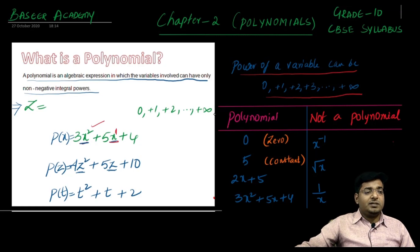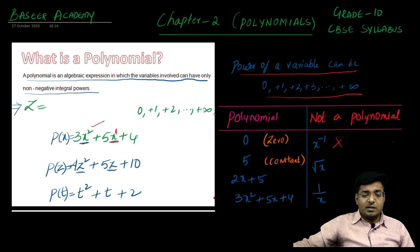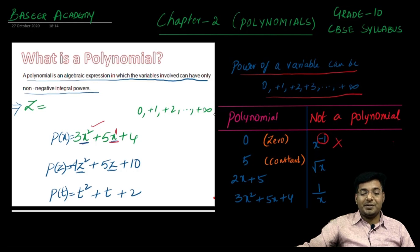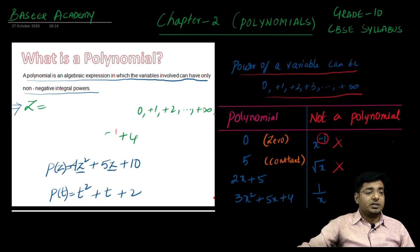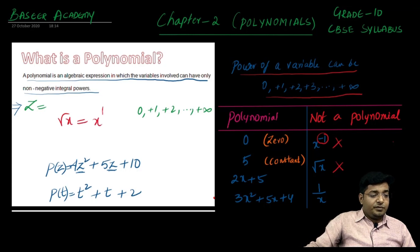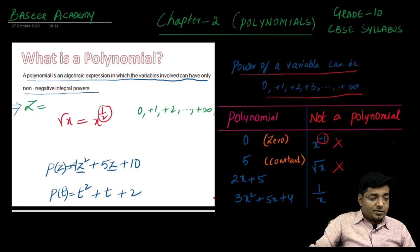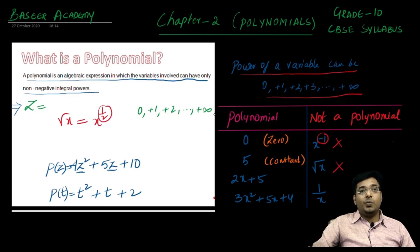Now let us learn what is not a polynomial. x to the power of minus 1 is not a polynomial, because the power of the variable x is minus 1, a negative integer. Root x is also not a polynomial. Why? Because root x, when you remove the square root, you have to keep the power 1 by 2, and this 1 by 2 is not a positive integer. So if you have a variable inside a root, it is not a polynomial.